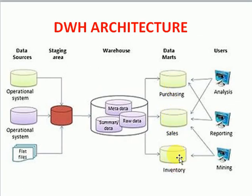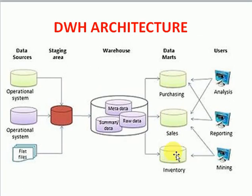If you look at these three data marts — purchasing, sales, and inventory — there are some common tables. The product table is common across all three. Similarly, the time dimension is common for all these data marts. The same goes for location: whatever geography locations they are maintaining, that is also common across the three data marts.